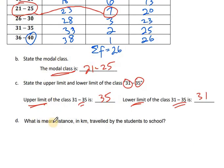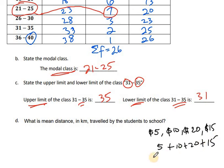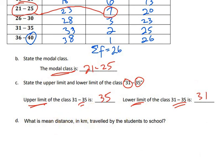The next question asks for the mean distance in kilometers traveled by the students to school. To understand mean, consider a quick example: if you earn $5 on Monday, $10 on Tuesday, $20 on Wednesday, and $15 on Thursday, the mean is the average — you add up the values (5 plus 10 plus 20 plus 15) and divide by the number of values, which is 4.